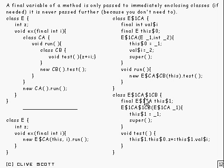And if you look at CB, obviously we're going to have to save this $1, the instance of the enclosing class, like that. And this method test down here is going to use Z plus equals i. And Z,